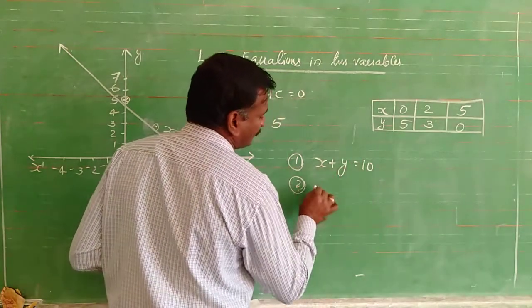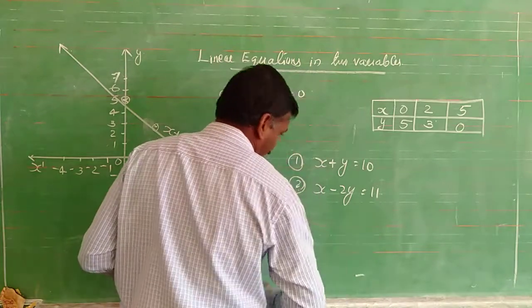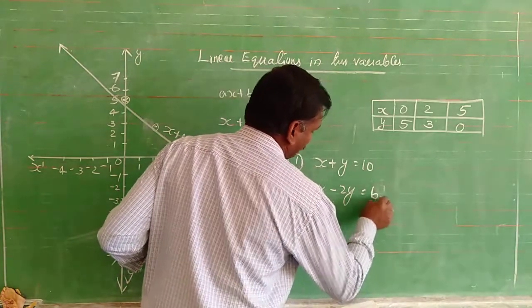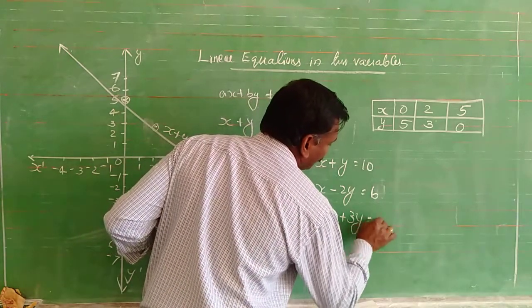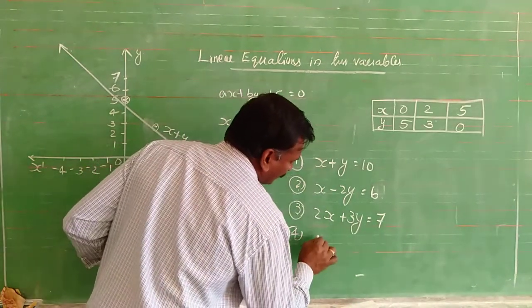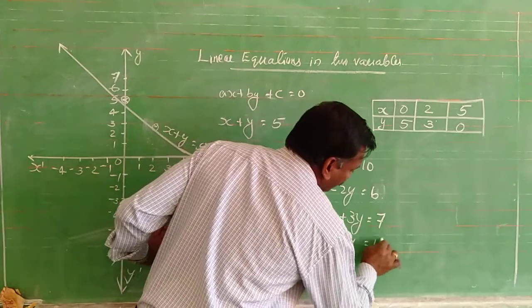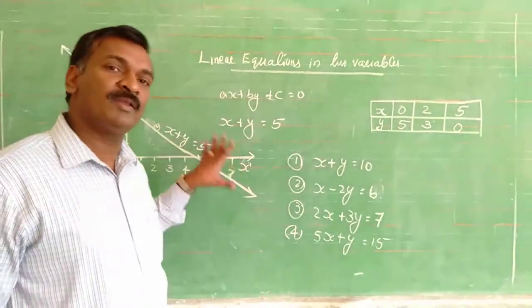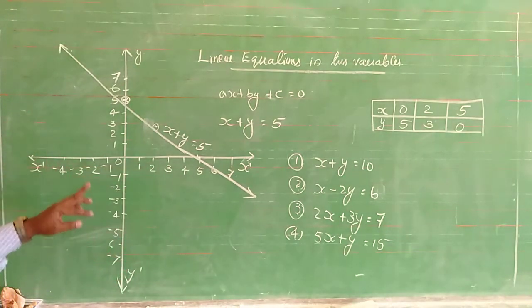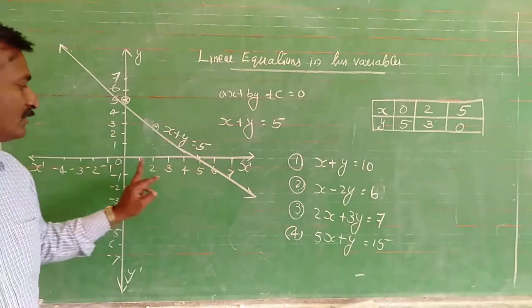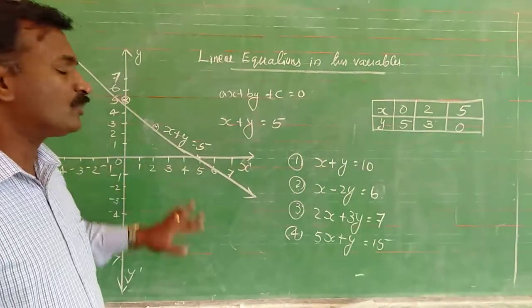Another example: x minus 2y is equal to 6. For the graph, you have to draw in your notebook. Make the x axis and y axis, x and y dash, at equal distances. First you find out the coordinates of x and y, then plot the points on the line.